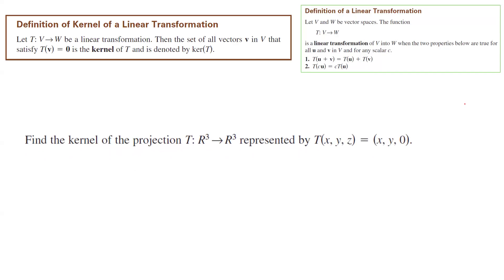In this question, I ask you to find the kernel of the projection T that maps R³ to R³ itself. This projection takes (x, y, z) and it maps it to (x, y, 0). So as you can see, the third component just vanishes. It becomes zero.